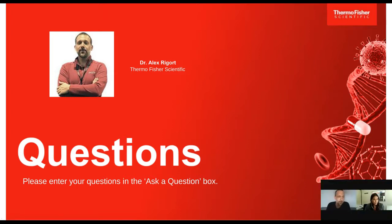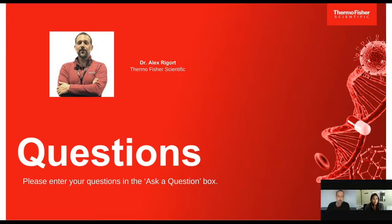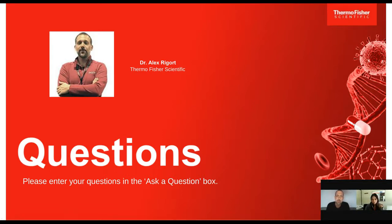Welcome back. Thank you to Alex for your informative presentation. I'm Leah Lavery, moderating the live Q&A. Please click the Ask a Question box to submit questions. Our first question, Alex: how thick do you need to make your lamella for imaging? Typically a lamella is 200–300 nanometers in thickness. The thickness depends on the mean free path you need to account for when imaging with a 300 kV TEM system. You also need to make sure that the feature of interest is accommodated within that volume, so typical thicknesses are between 200 and 300 nanometers.